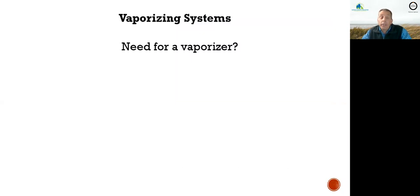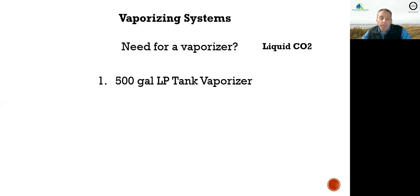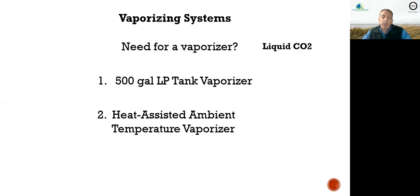We did build three vaporizing systems, but why the need for a vaporizer? Liquid CO2 comes in compressed form at negative 81 degrees and high pressure. We bring it down to atmospheric pressure and warm it up — hence the need for a vaporizer. Our first one was a 500-gallon liquid propane tank vaporizer — literally a liquid propane tank — which we use to help vaporize the liquid CO2.